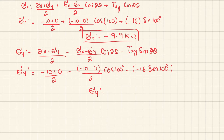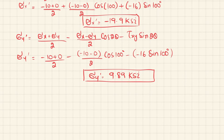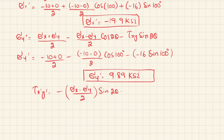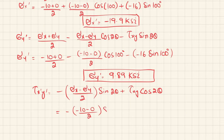Sigma Y dash comes out to be 9.89 KSI. Now for Tau of X dash Y dash: the equation is (Sigma X minus Sigma Y) divided by 2 times sine of 2 theta, plus Tau XY times cosine of 2 theta. Substituting: (minus 10 minus 0) divided by 2 times sine of 100 degrees, plus (minus 16) times cosine of 100 degrees.